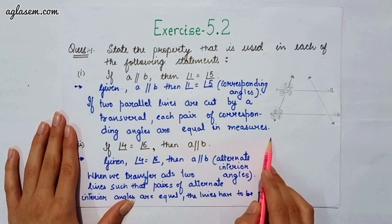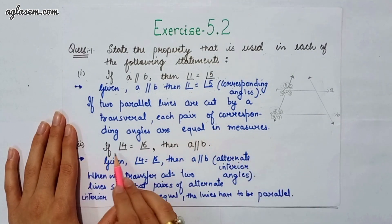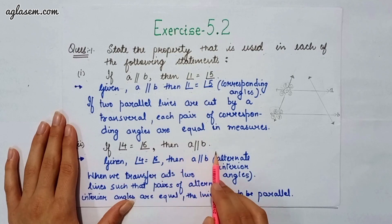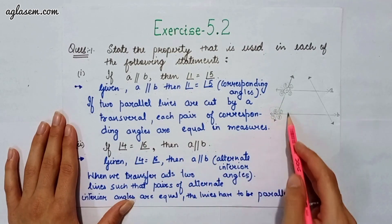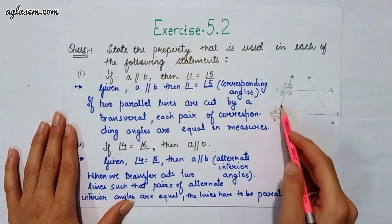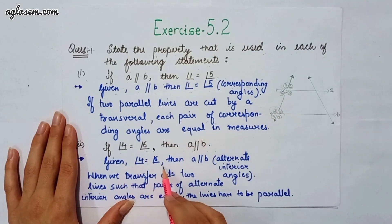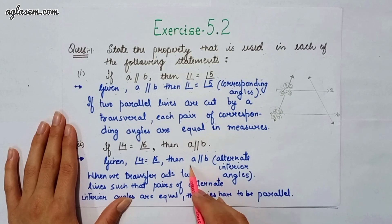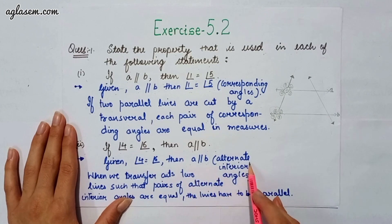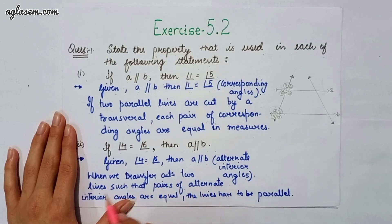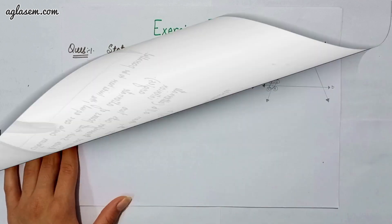The second part says if angle 4 is equal to angle 6, then A is parallel to B. Given angle 4 equals angle 6, A is parallel to B by alternate interior angles. When a transversal cuts two lines such that the pair of alternate interior angles are equal, the lines have to be parallel.